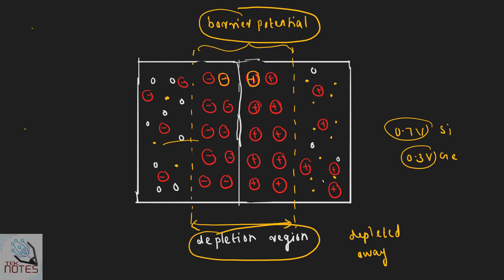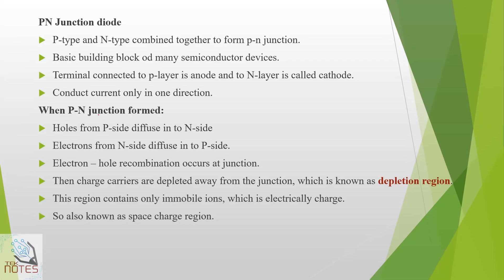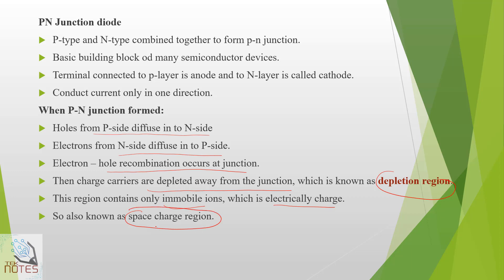The potential difference across the depletion region is called barrier potential — 0.7V for silicon and 0.3V for germanium. Charge carriers are depleted away from the junction, forming the depletion region, which contains only immobile ions. These ions are electrically charged: positive on one side and negative on the other. The depletion region is also known as the space charge region.